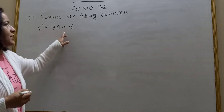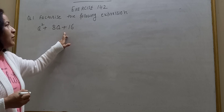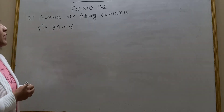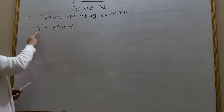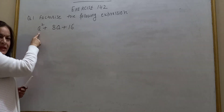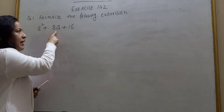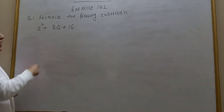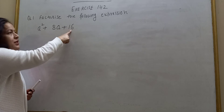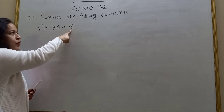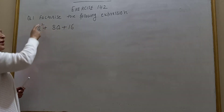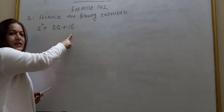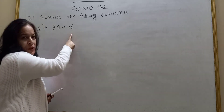To factorize this expression, I use an identity. This expression contains three terms. First term A squared, second term 8A, and third term 16. 16 is a square of 4 and A squared is a square of A. It means the first and last terms are perfect squares.